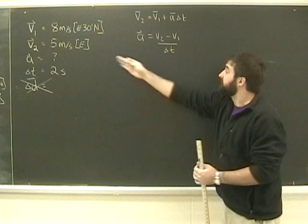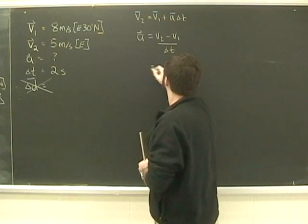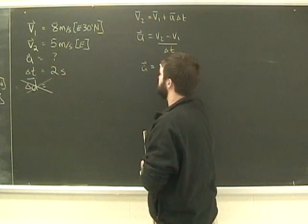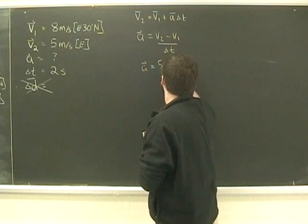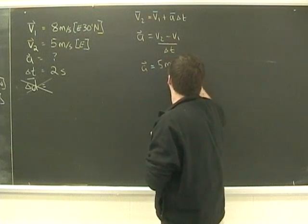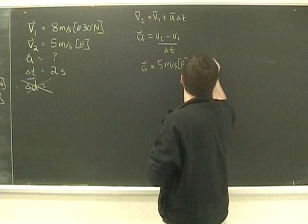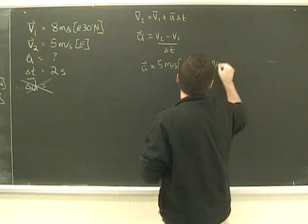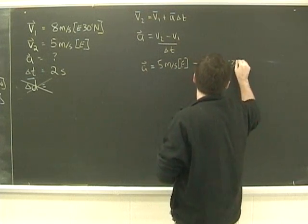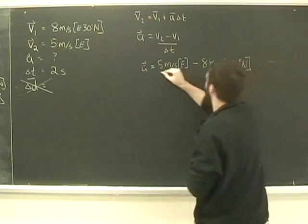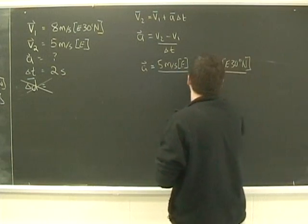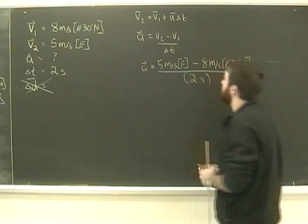Now it's a simple matter of substituting from my givens into my formula. Acceleration is going to be 5 meters per second east minus 8 meters per second east 30 degrees north, all of this divided by 2 seconds.